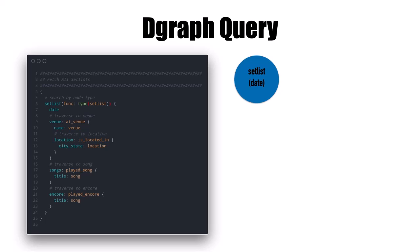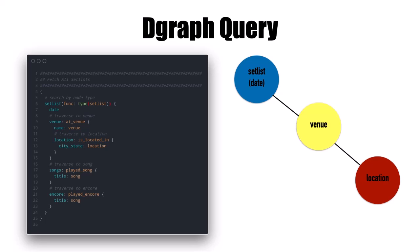What does a DGraph query look like? Starting with set list and date: using the type function, this searches by the node type set list. Then we traverse to the venue, and from the venue we traverse to the location. Then we pop back up to the set list and traverse to the song relationship through both played_song and played_encore. That's basically what this example is showing.